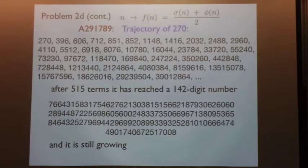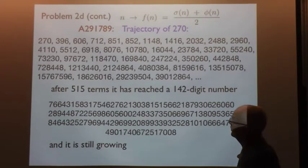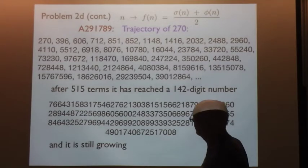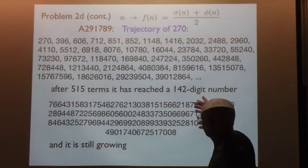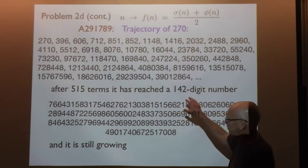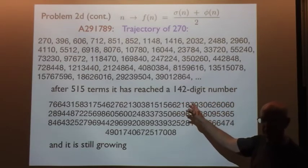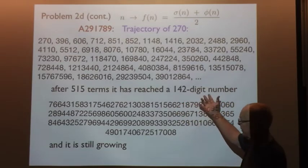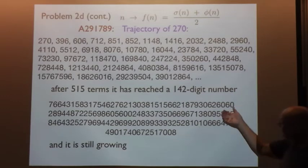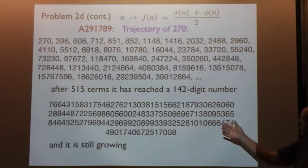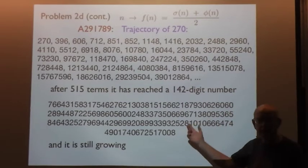Here's the trajectory of 270. It starts out 273, 96, and so on. He has pushed many of these to more than 500 terms. After 515 terms, we have a 142-digit number, and it's still growing.